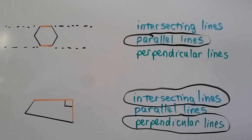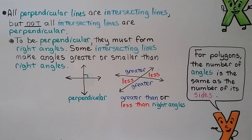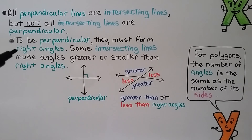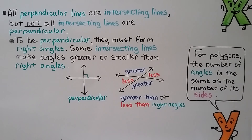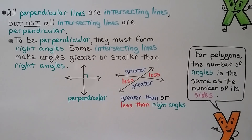This quadrilateral has intersecting lines and perpendicular lines — it has both. All perpendicular lines are intersecting lines, but not all intersecting lines are perpendicular. To be perpendicular, they must form right angles. Some intersecting lines make angles that are greater or smaller than right angles.